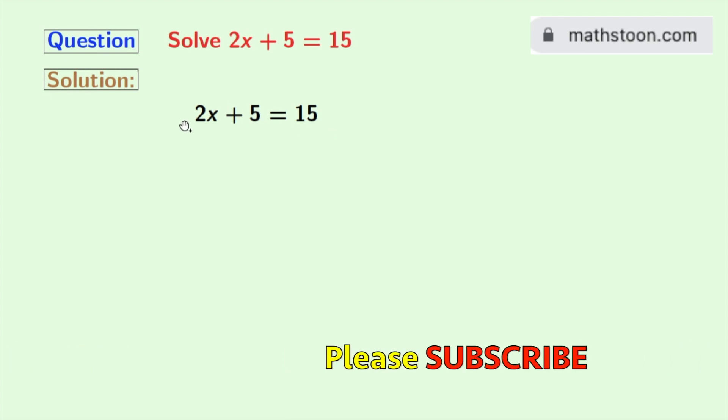Now to get the value of x, we will first subtract 5 from both sides. Doing so, we get 2x plus 5 minus 5 equals 15 minus 5.